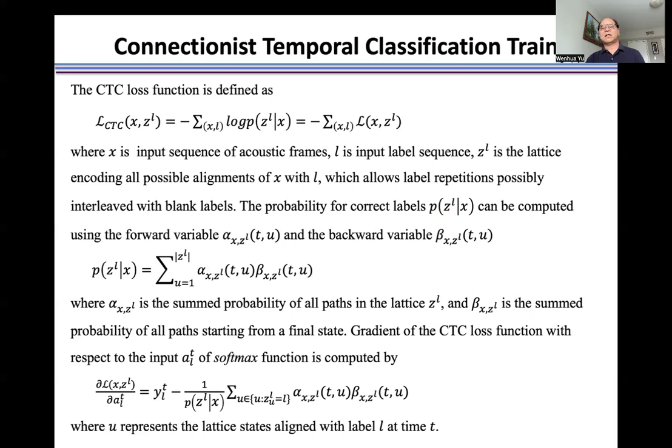The probability for correct labels p(z^l|x) can be computed using the forward variable alpha and the backward variable beta. Alpha is the summed probability of all paths in the lattice z^l, and beta is the summed probability of all paths starting from a final state.